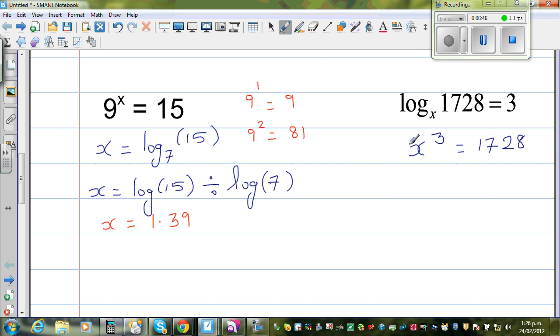To get rid of this x cube, I have to take the cube root of this side. Cube root of x cube is equal to cube root of 1728. Cube root of x cube, they're opposite of each other, they cancel each other out. So x is nothing but cube root of 1728.